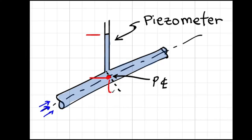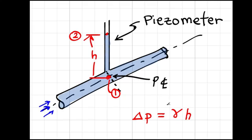I'll call this point one and I'll call this point point two. The liquid in here has the same density, so I'll write the change in pressure is equal to the specific weight times the elevation change, which is h, where h is the elevation difference between point one and point two.